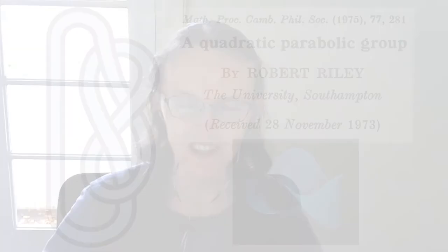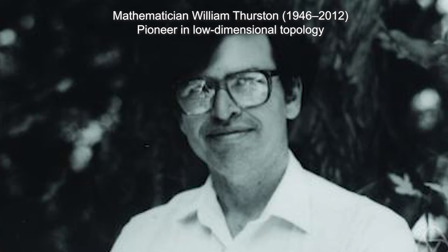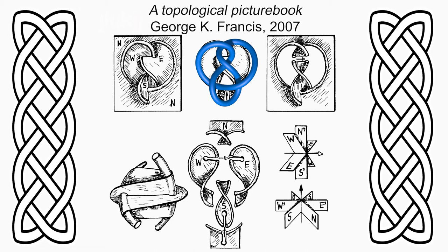Her favorite knot is probably the figure eight knot — the knot with only four crossings, and also the smallest knot that has a hyperbolic structure. Back in the 1970s, Riley and then Bill Thurston were looking at the complement of this knot and came up with a way of cutting it into exactly two tetrahedra. If you make these tetrahedra completely regular and glue them back together, you get the figure eight knot. It has a very beautiful, simple hyperbolic structure, and it opened up a whole new world of applying geometry to knot theory.